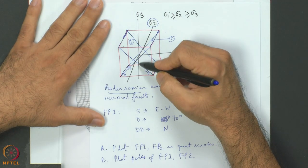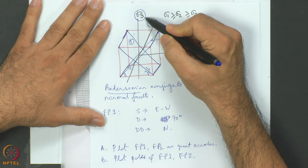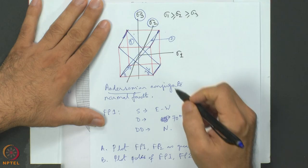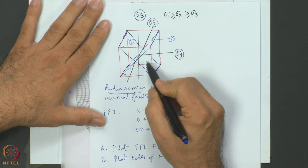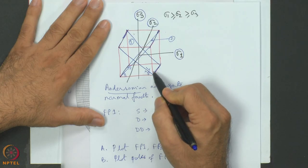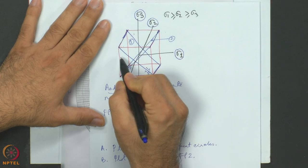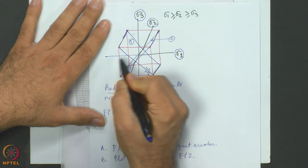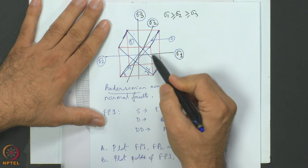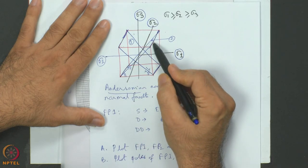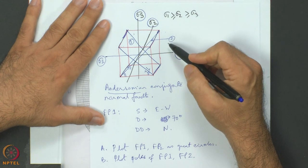We can think of a vertical line which is the sigma 3 principal stress axis. The sigma 1 principal stress axis is along the dip direction of fault plane 1, and extending this line, sigma 1 is also along the dip direction of plane 2. This is known from theoretical fact.